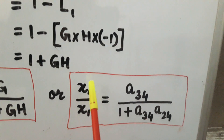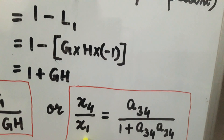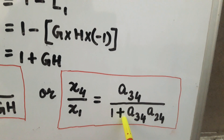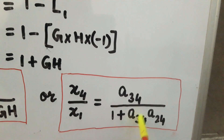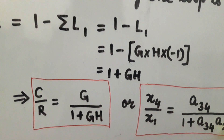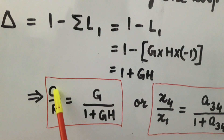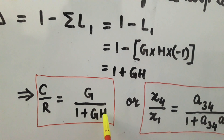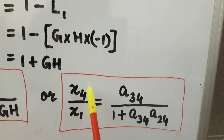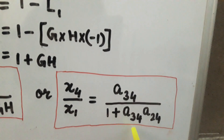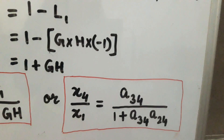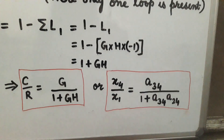Substituting into the formula, x4/x1 = p1·delta1 / (1 − l1). Since a34 = g and a42 = h, the overall gain c/r = g / (1 + g·h). Equivalently, x4/x1 = a34 / (1 + a34 × a42). I hope this is clear to all of you.